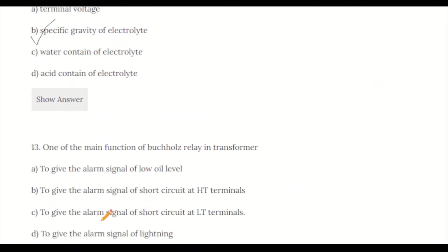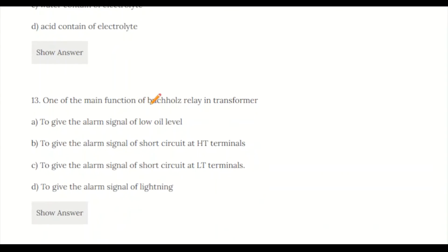Question 13: One of the main functions of Buchholz relay in transformer: a) to give alarm signal of low oil level, b) to give alarm signal of short circuit at HT terminals, c) to give alarm signal of short circuit at LT terminals, d) to give alarm signal of lightning. Buchholz relay is used to give alarm and trip signal for low oil level in transformer. A is the correct answer.